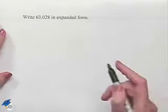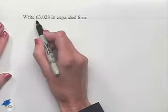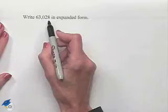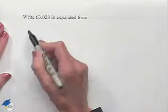Here's a second example using expanded form. Write 63,028 in expanded form. Each digit has a particular place value. We're going to begin with the 6, which is in the one, ten, hundred, thousand, ten thousand place.